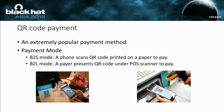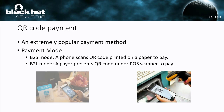The last two attacks are based on QR code, which is an extremely popular payment method. There are two modes for QR code mobile payment. The first is B2S mode, where a phone scans the QR code printed by the vendor to pay. The second is B2L mode, where a payer presents the QR code generated by their mobile phone under the scanner of the vendor. Our work is based on the second type — B2L mode. The QR code is generated by the mobile phone carrying a token.